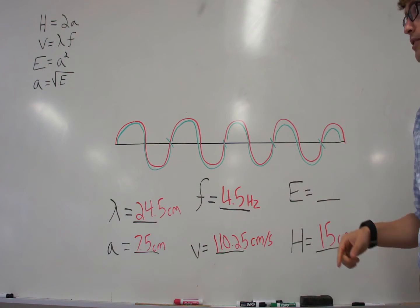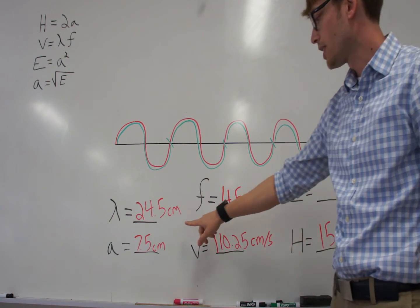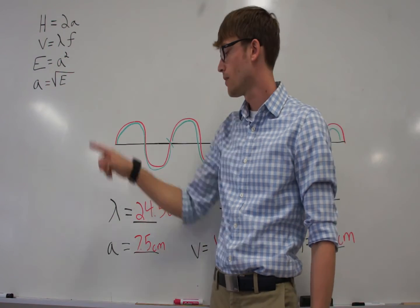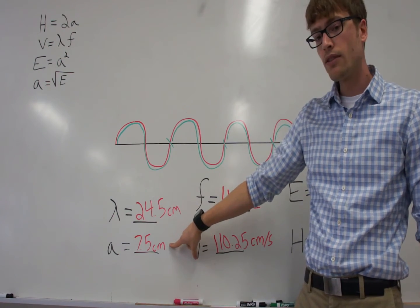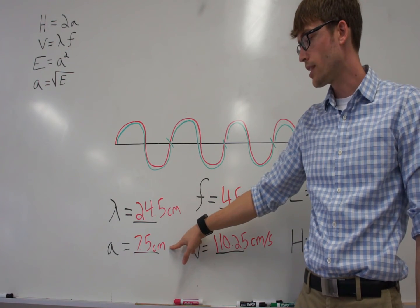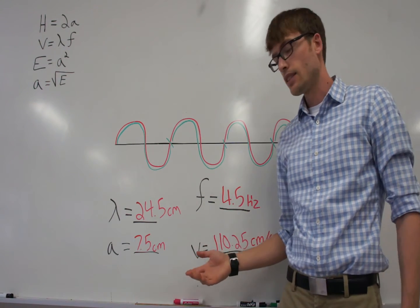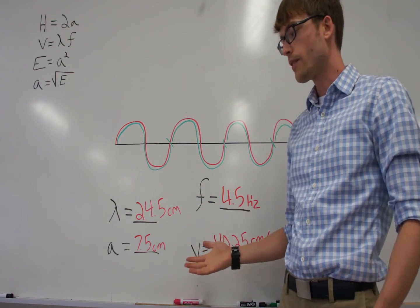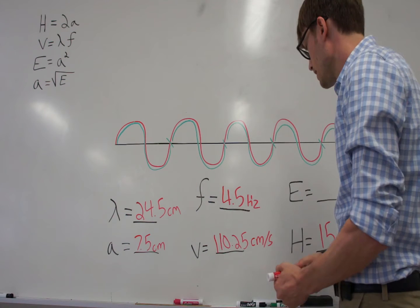Next, let's look at finding energy. Energy is simply the amplitude squared, as you can see right here. You can either use the fancy square button on your calculator, or you can simply multiply the number by itself. In this case, 7.5 times 7.5, or 7.5 squared, is 56.25.